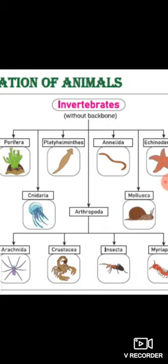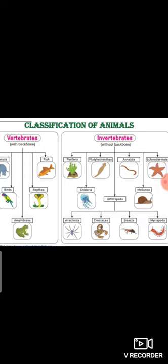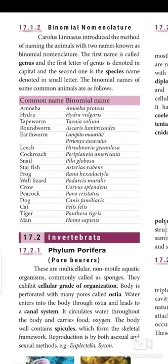Next, we need to see about binomial nomenclature. Carolus Linnaeus introduced the method of naming animals with two names, known as binomial nomenclature. The first name is the genus — the first letter of the genus is written in capital — and the second name is the species, written in small letters. Some examples: amoeba — Amoeba proteus; starfish — Asterias rubens; peacock — Pavo cristatus; tiger — Panthera tigris; man — Homo sapiens. We shall see about invertebrata in another video. I hope you enjoyed today's lesson. God bless you, all the best.